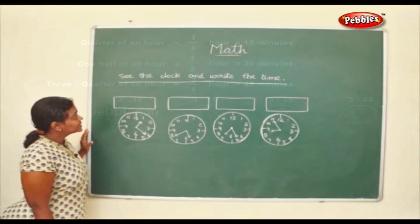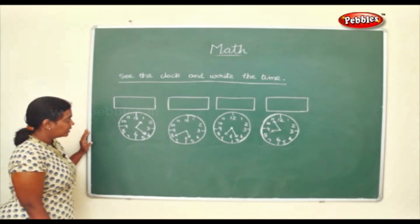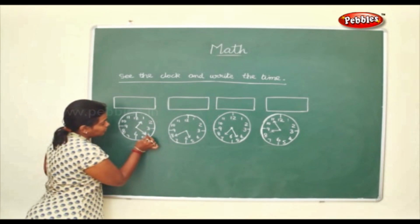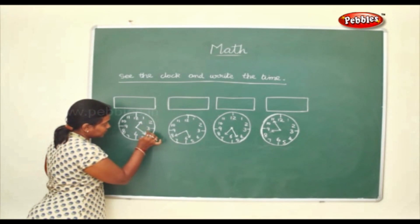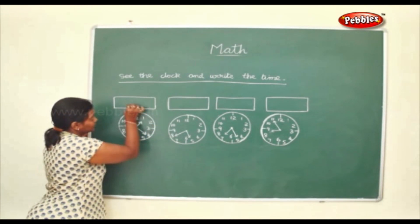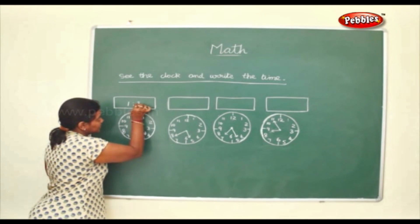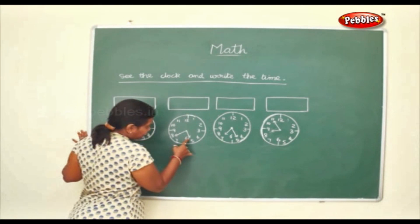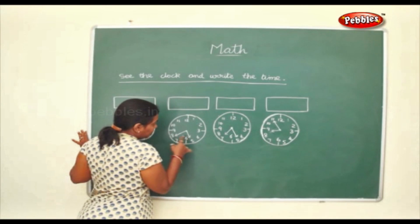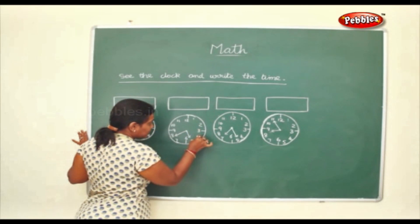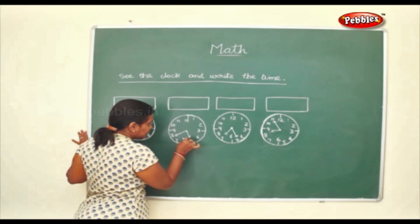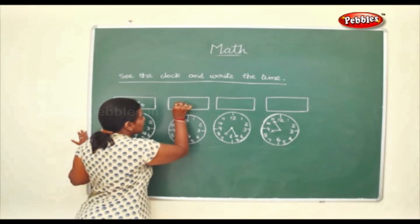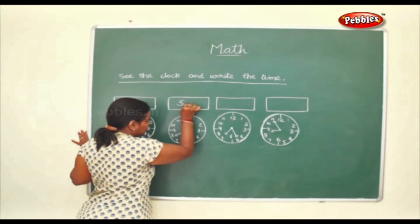Now we shall see the clock and write the time. Here the short hand is at 1, the long hand counting 5, 10, 15, 20 — so this is 1:20. Here the short hand is at 5, the long hand counting 5, 10, 15, 20, 25, 30, 35, 40 — so this is 5:40.